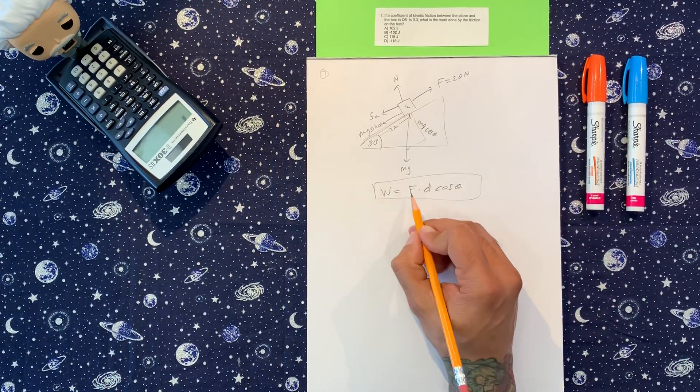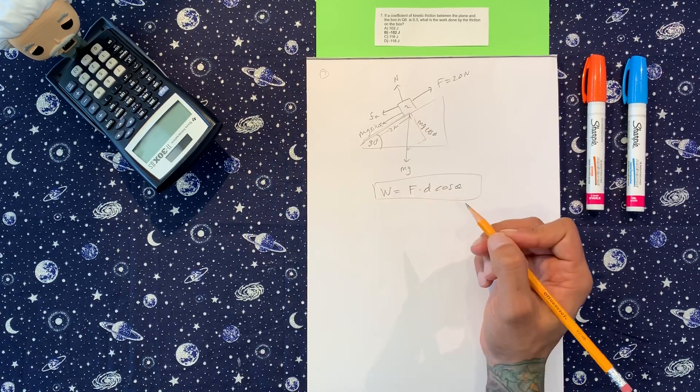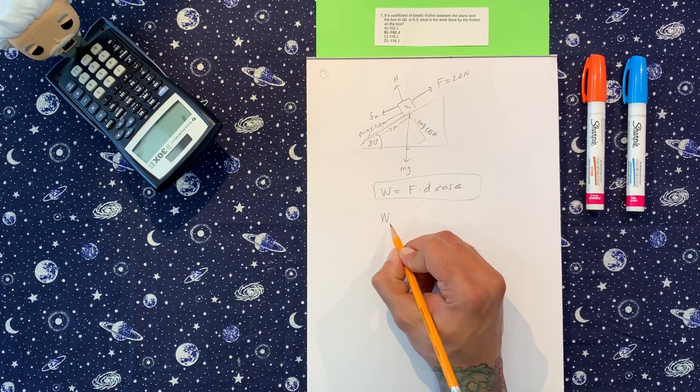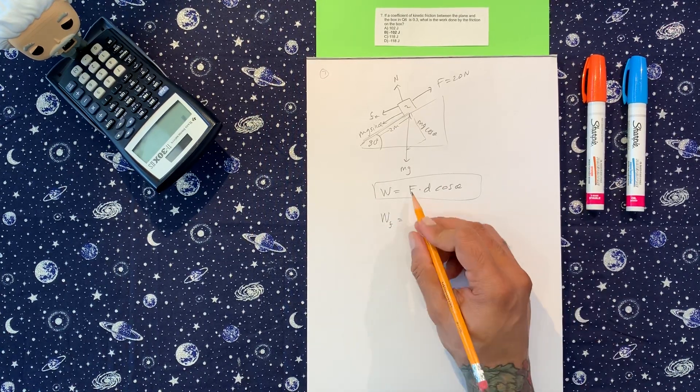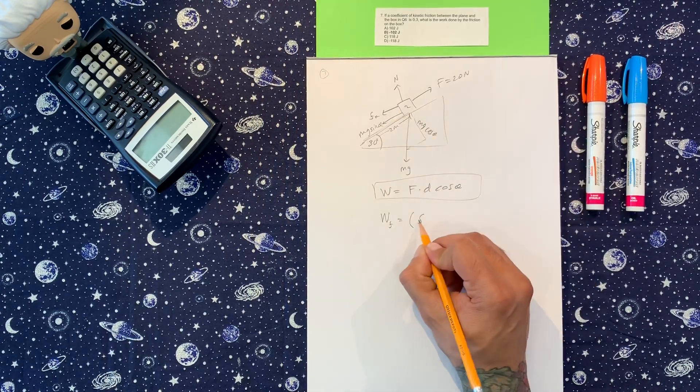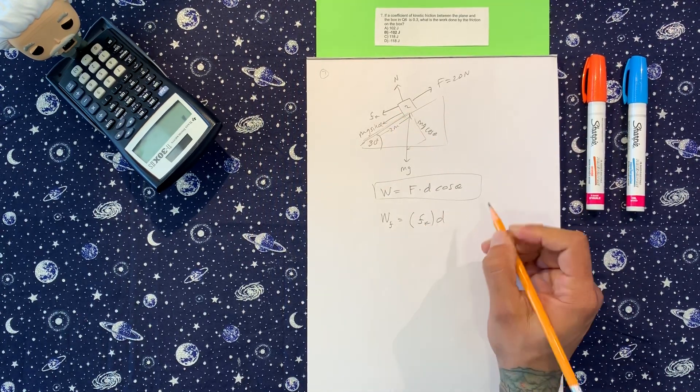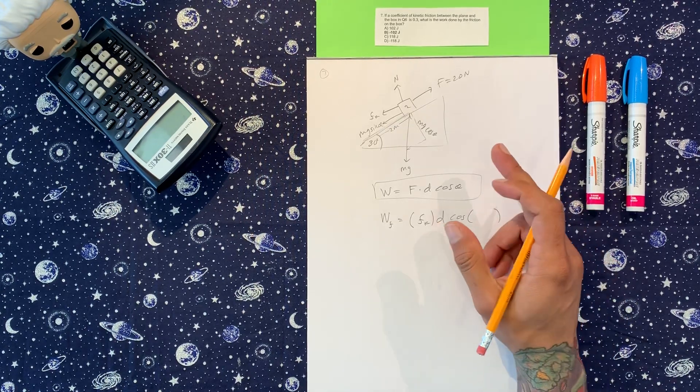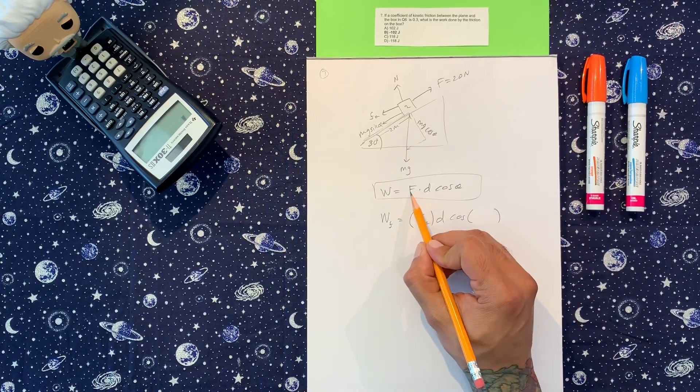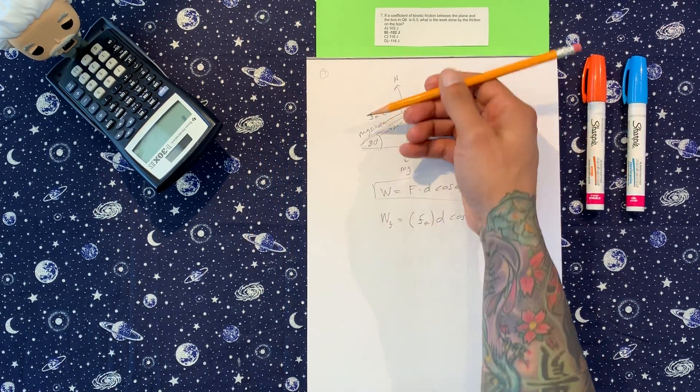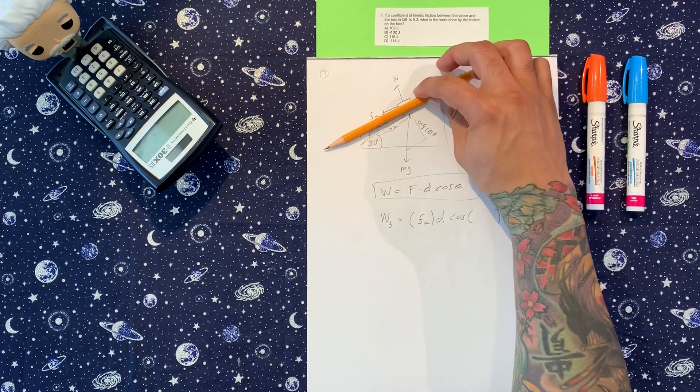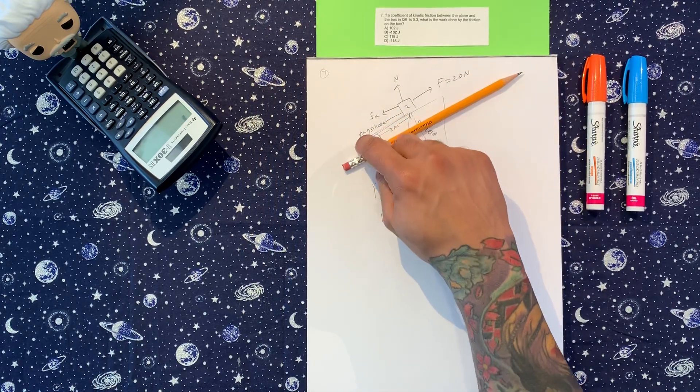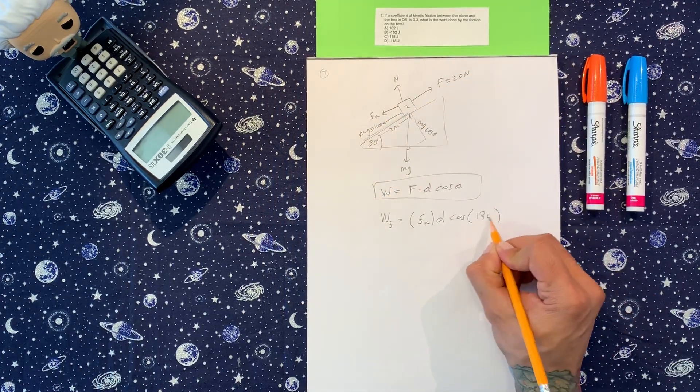The force is going to be friction. So we're interested in the work done by friction, and that force is going to be the frictional force. We have displacement and then cosine of the angle, which is important. What is the angle between friction, the frictional force and displacement? Frictional force is in this direction, displacement is 180 degrees that way, because it went from here to here.